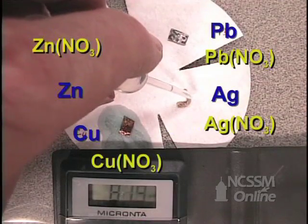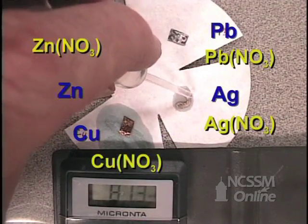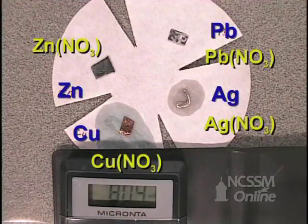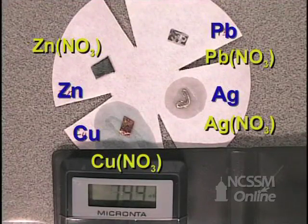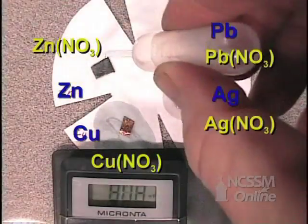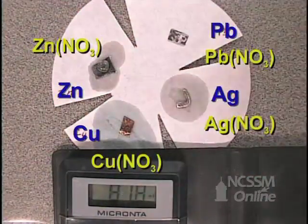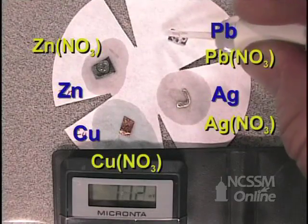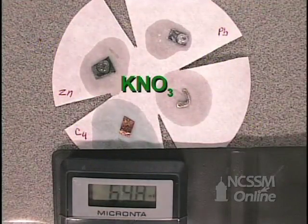So you have copper nitrate around the copper, you have silver nitrate around silver, zinc nitrate around the zinc, and lead nitrate around the lead with a space in the middle for your salt bridge of potassium nitrate.